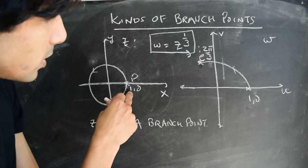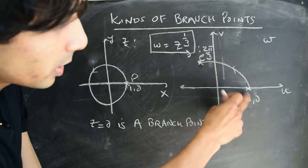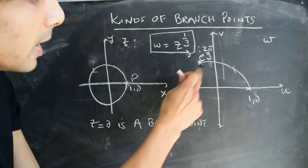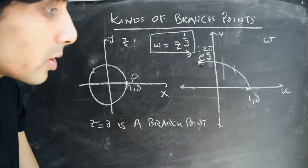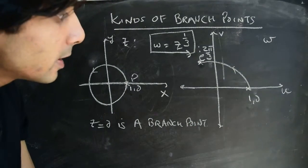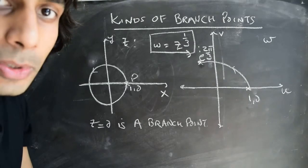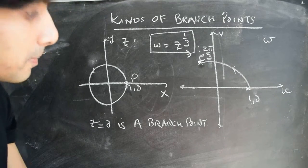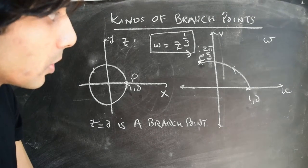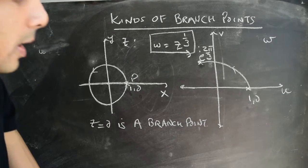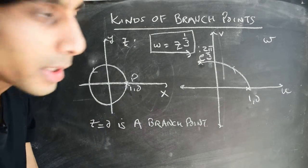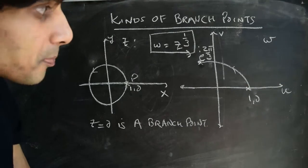If you make one rotation in the z-plane on the unit circle, we saw that we end up at the point e to the power of i·2π/3. One question one could ask is: how many rotations do you have to make such that you actually come back to the point (1,0) in the w-plane? We already know the answer: we need to make three rotations in the z-plane to come back to the point (1,0).